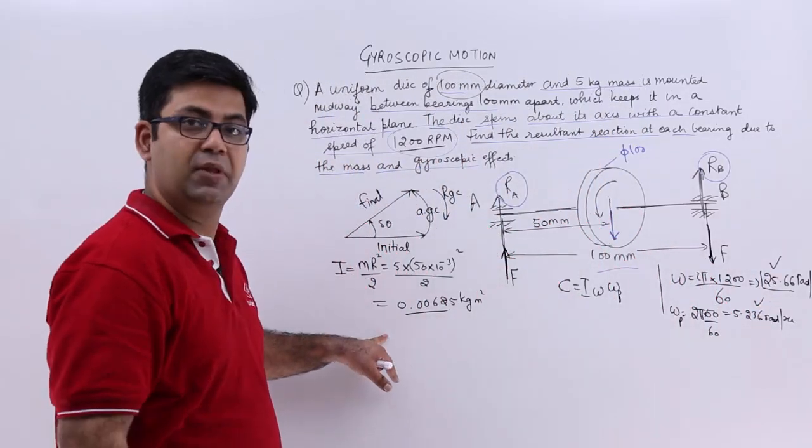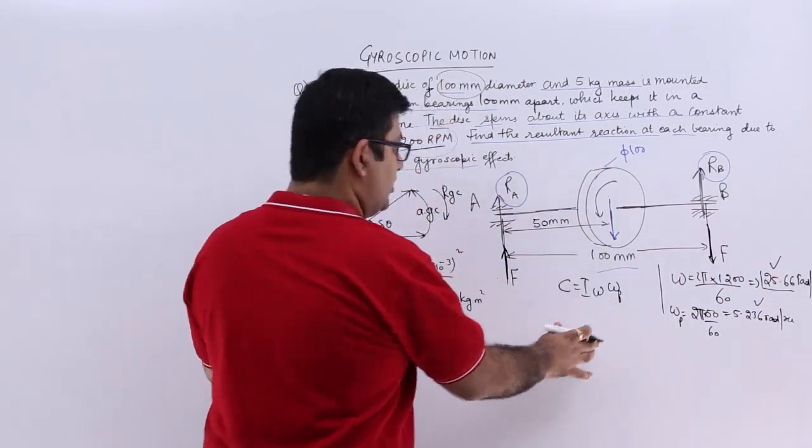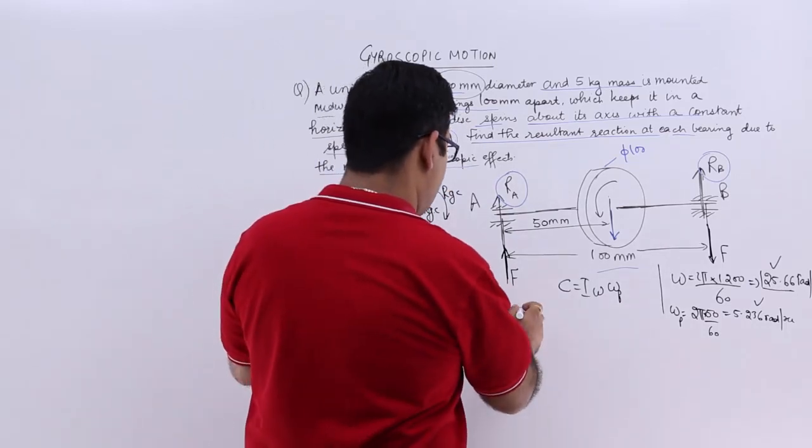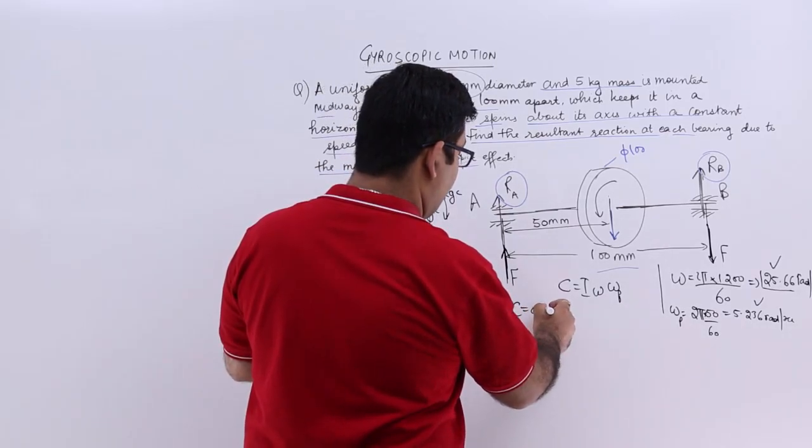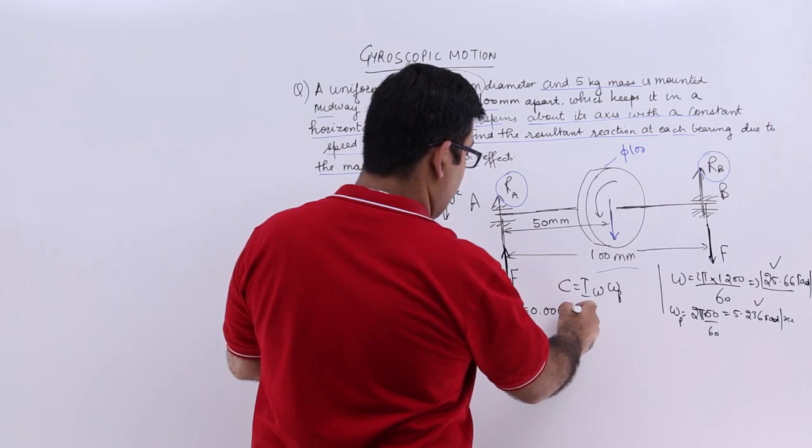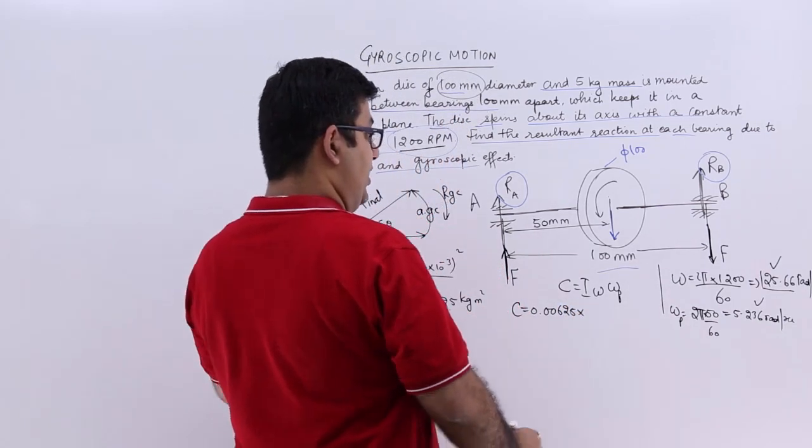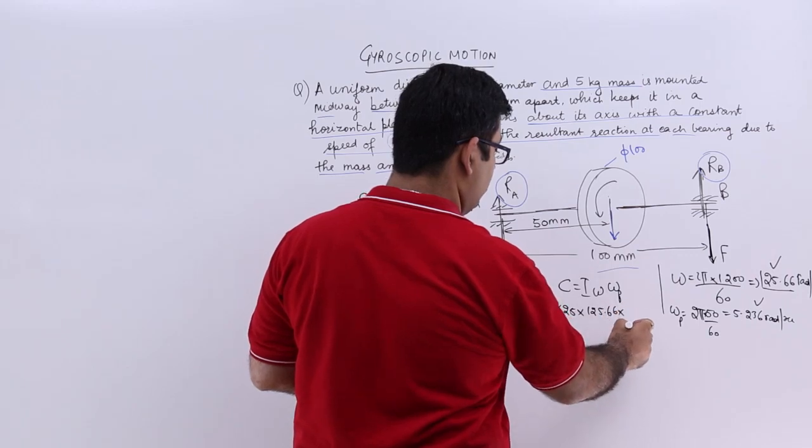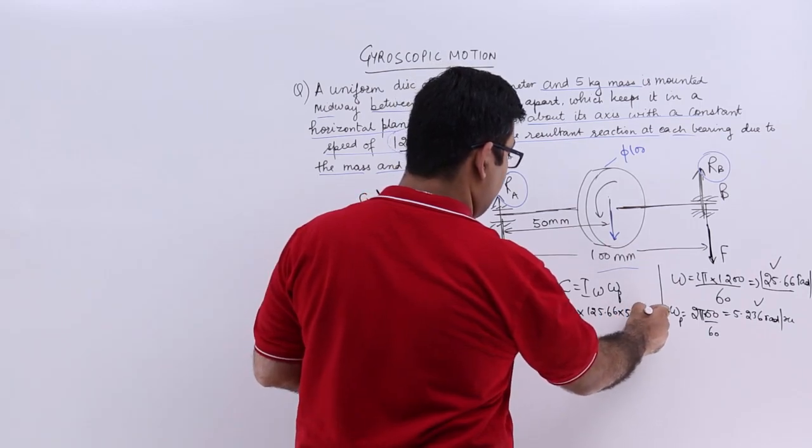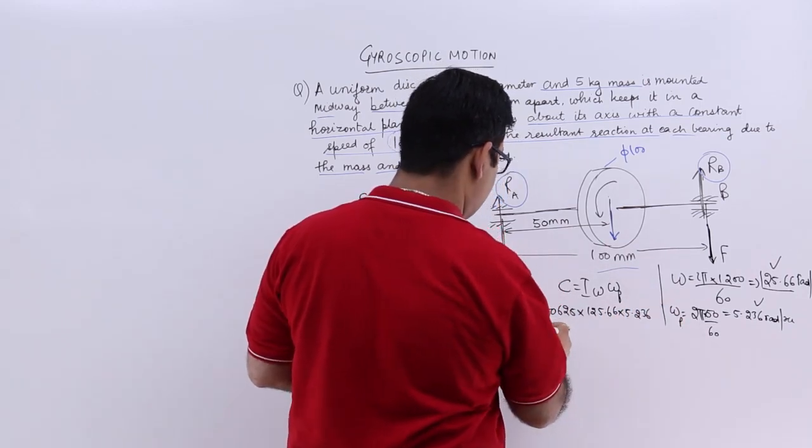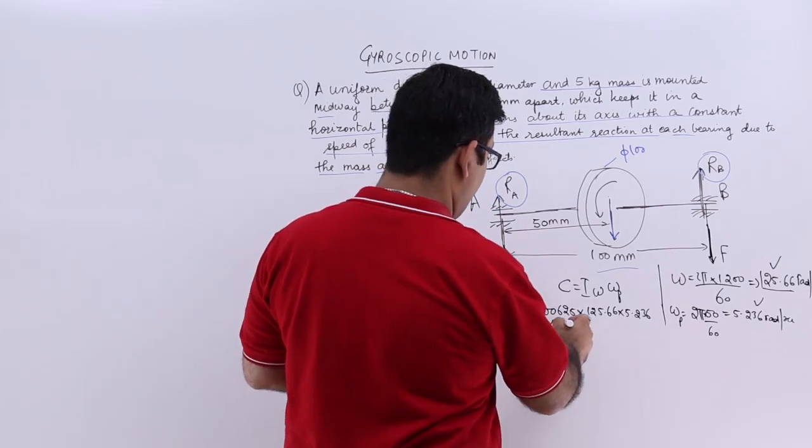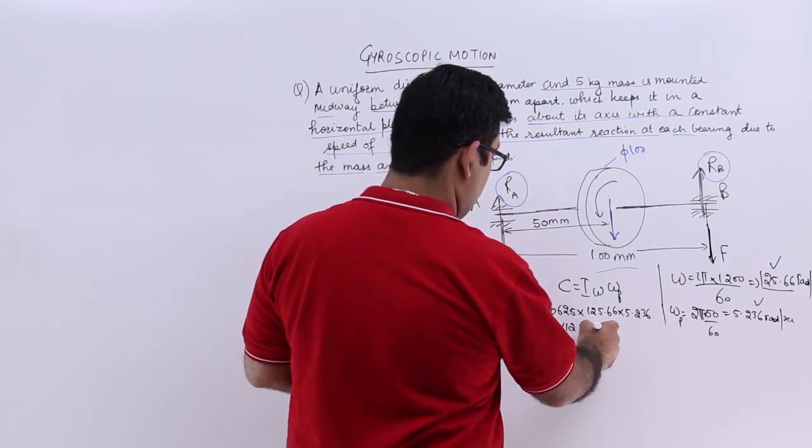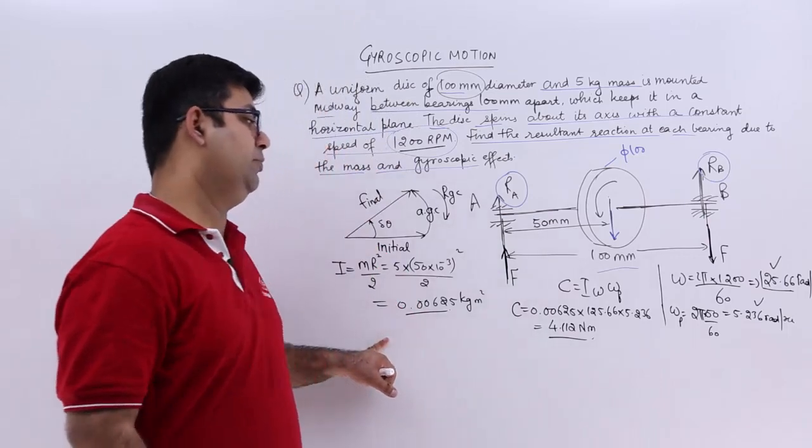So we have omega and we have omega_p and we have I. Put it in this equation, you get the value for C. So C would be 0.00625 × 125.66 × 5.236, and this would give you 4.112 newton meter. So that is your gyroscopic couple.